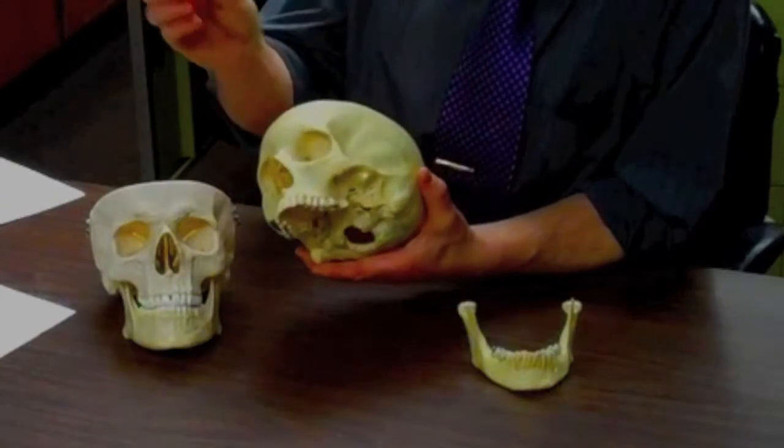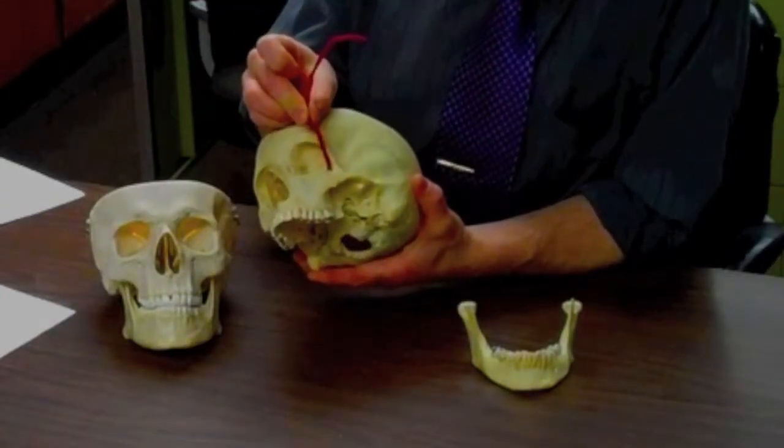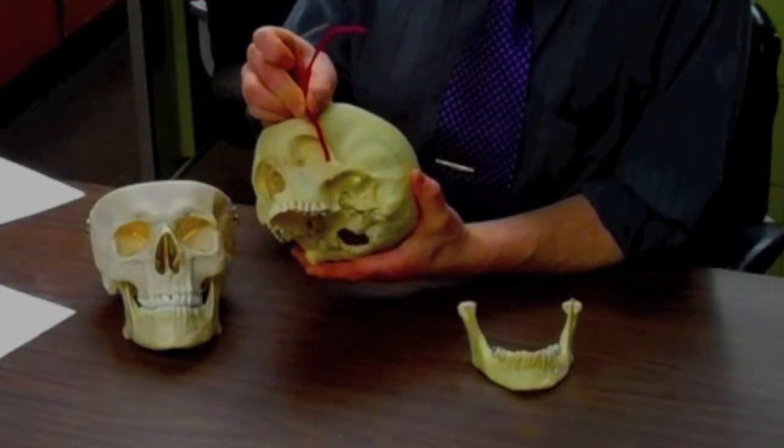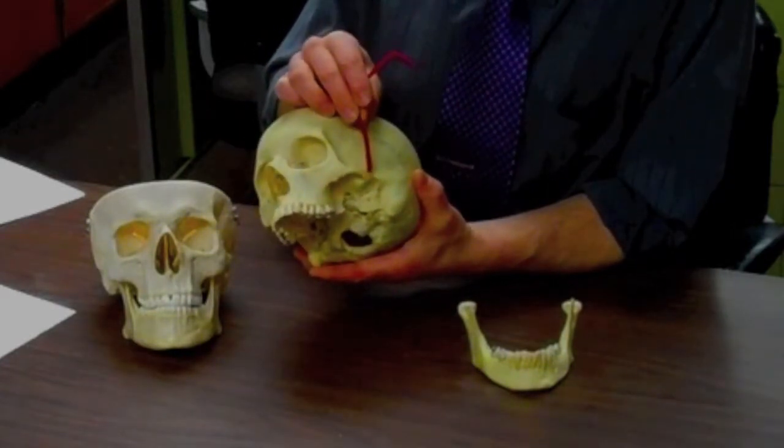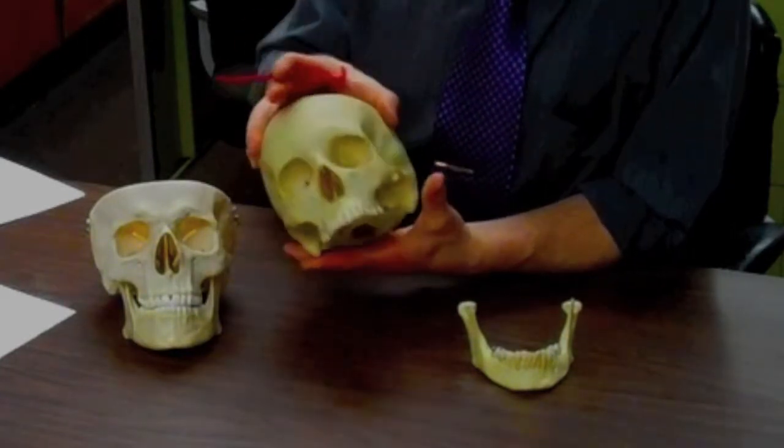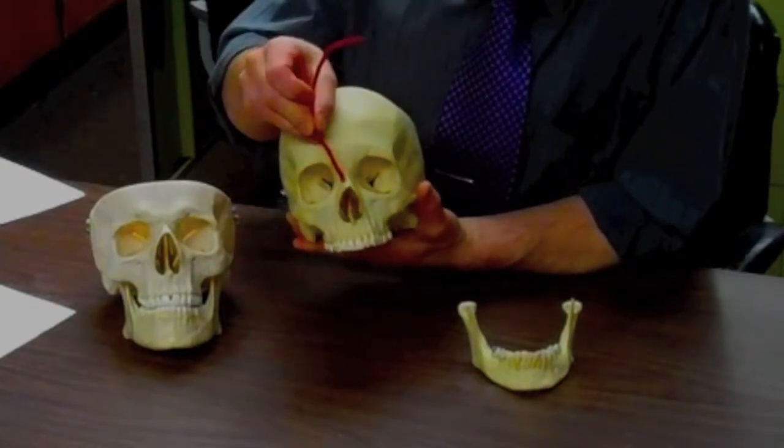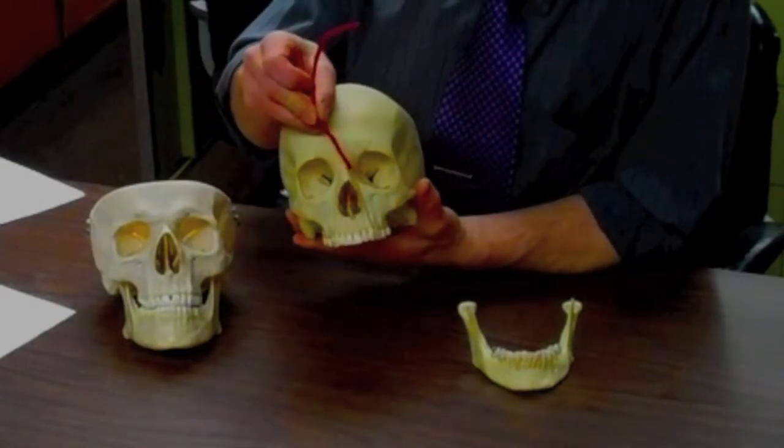The cheek bone is right here. That's known as the zygomatic bone, that then connects posteriorly with the temporal bone. The nasal bone is right here, the bridge of the nose. That's the nasal bone.